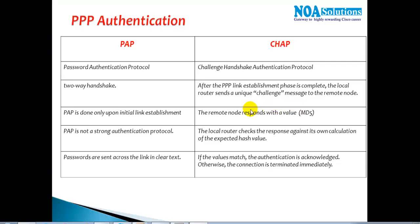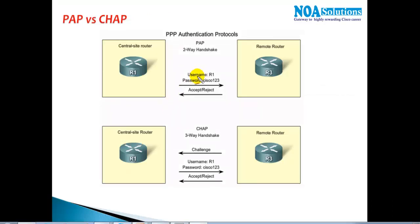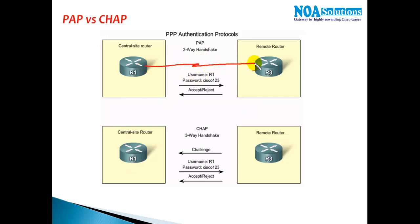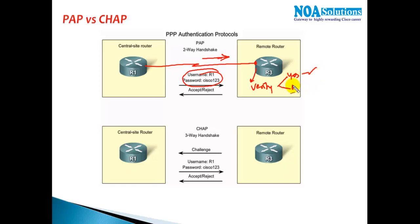In the two-way handshake process, when Router 1 tries to establish a connection with Router 3, it sends the username and password without being asked. Router 3 verifies that username and password — if it matches it establishes the connection; if there is a wrong password or configuration mismatch it simply rejects the connection.